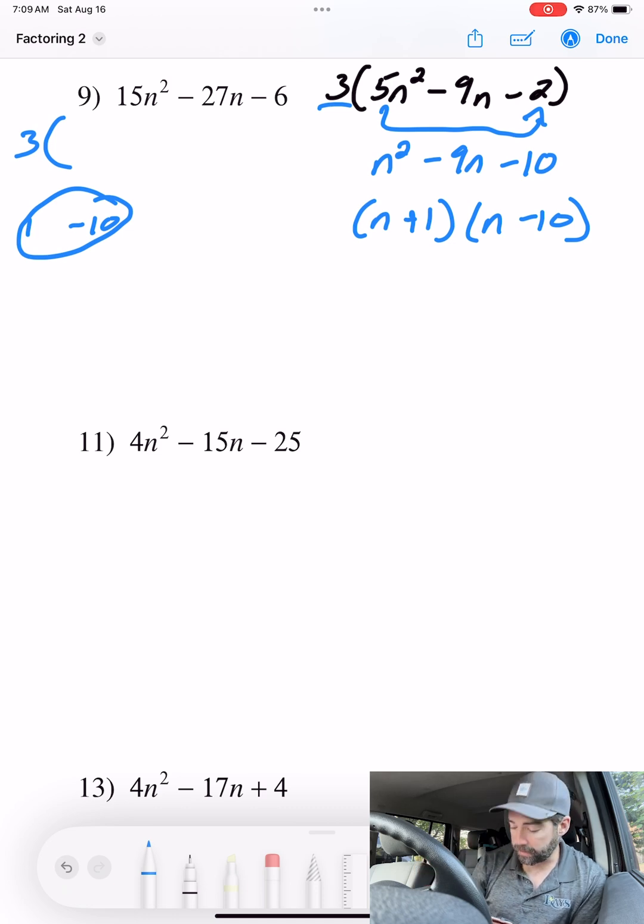Now we need to divide that 5 back. So we divide by 5, divide by 5. This one's going to slide. So we have 5n plus 1, and n minus 10 divided by 5 is 2.